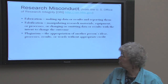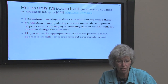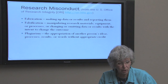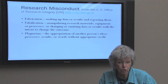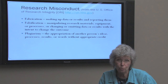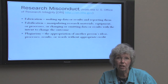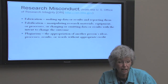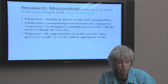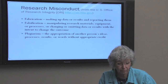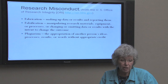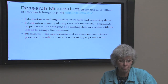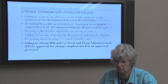Let's define a couple of those words. Fabrication, from the Office of Research Integrity and the U.S. Department of Health and Human Services, means that you've made up the data or results and you report them. Falsification can mean that you are manipulating some of the research materials so that they come out looking different — with a better spin on your results. And plagiarism is the appropriation of another's ideas or processes, results or words without appropriate credit. ORI in the United States requires that institutions receiving federal research funds must have policies in place and a mechanism to investigate allegations of misconduct.